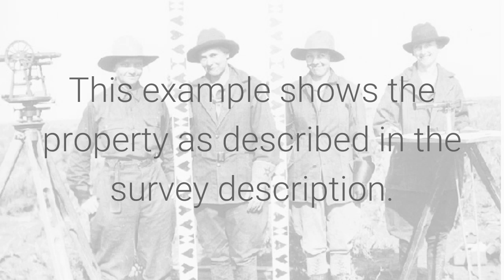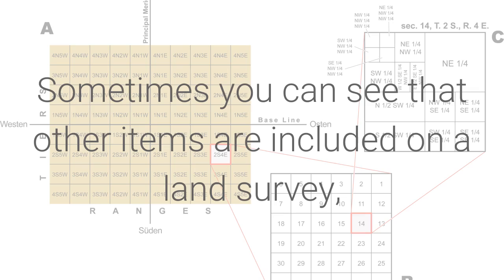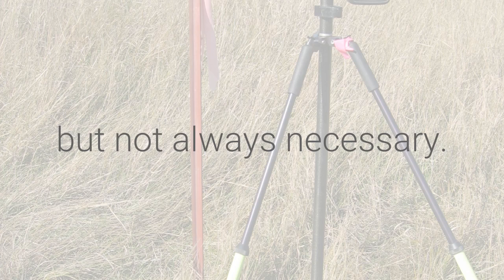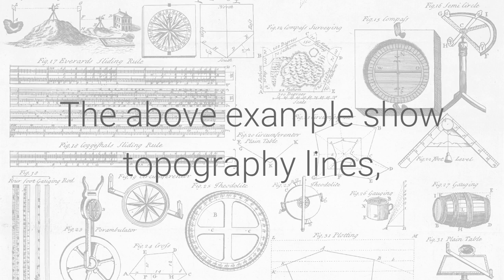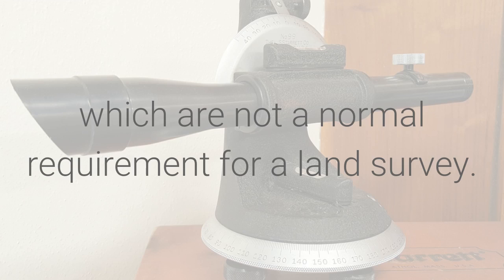This example shows the property as described in the legal description. Sometimes you can see that other items are included on a land survey, but not always necessary. The above example shows topography lines, which are not a normal requirement for a land survey.